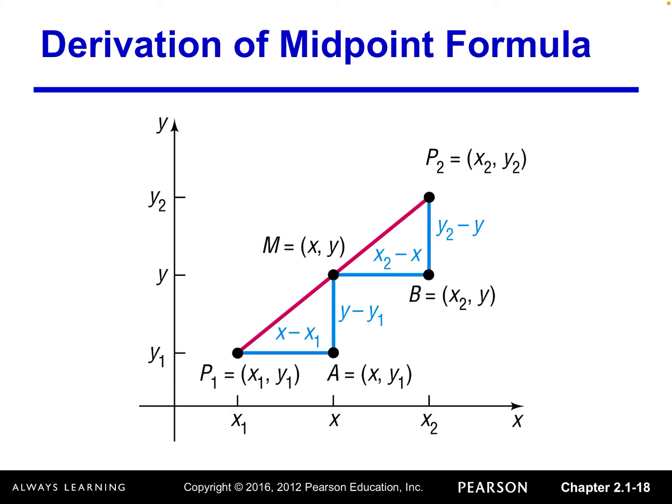Any two arbitrary points P1, P2, P1 denoted as X1, Y1, P2 denoted as X2, Y2. And then the midpoint is the middle of P1, P2. We denote it as capital M with coordinates X, Y.